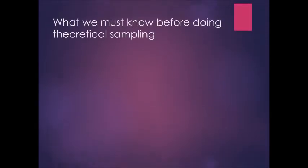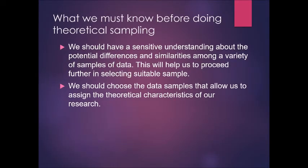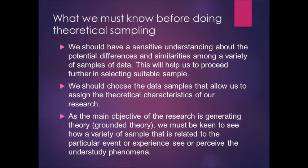What must we know before doing theoretical sampling? We should have a sensitive understanding about potential differences and similarities among a variety of samples of data. This will help us to proceed further in selecting a suitable sample. We should choose data samples that allow us to assign the theoretical characteristics of our research. As the main objective is generating grounded theory, we must be keen to see how a variety of samples related to the particular event or experience perceive the under-study phenomena.